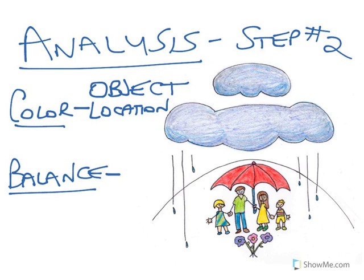The most important principle used to communicate an idea in this artwork is balance. The most important use of balance is the way the people are placed symmetrically in the center. If I divide this in half, you'll notice that generally almost everything — including the people — is the same on the left and the right. Not a hundred percent, but there are definitely more things that are the same than are different. That completes the analysis portion of this critique.